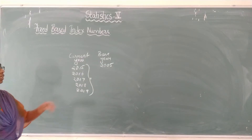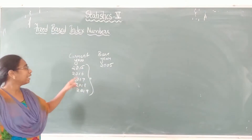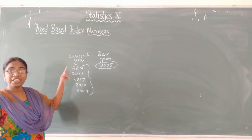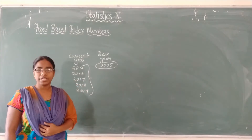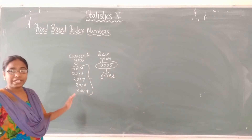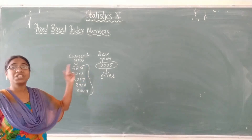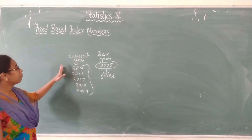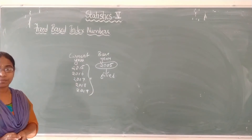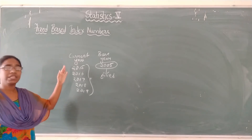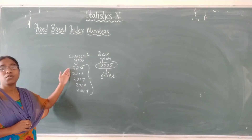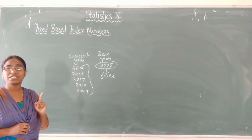Whatever base year we choose, if we are calculating index numbers by fixing that base year, then we are comparing different year prices with only that single year — here 2005 is fixed. So if we calculate index numbers using a base year which is fixed for all the years — from 2013 to 2019, the base year is fixed as 2005 — then the index numbers calculated by this fixed base method are called fixed base index numbers. In fixed base index numbers, for all the different years, there will be only one fixed base year.